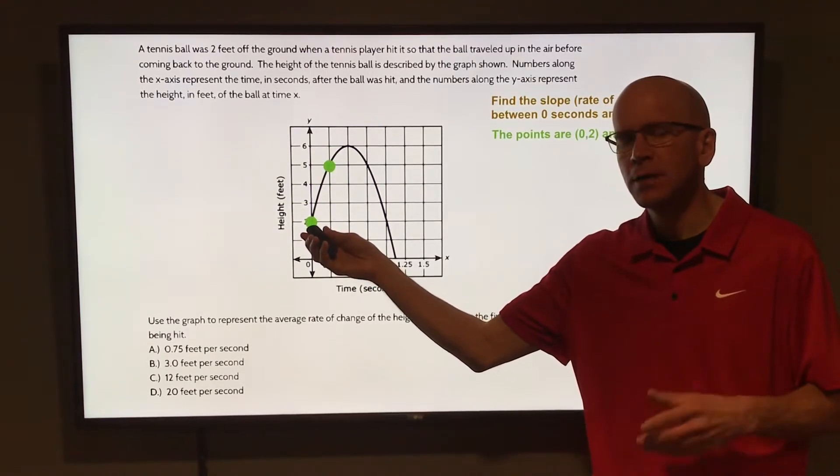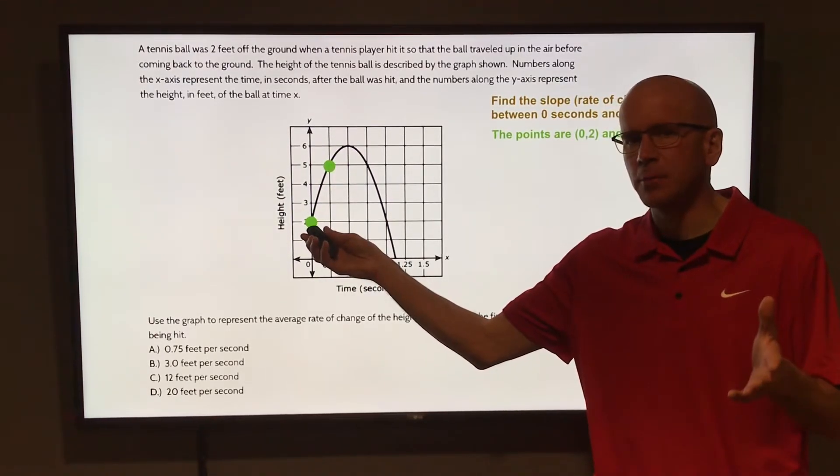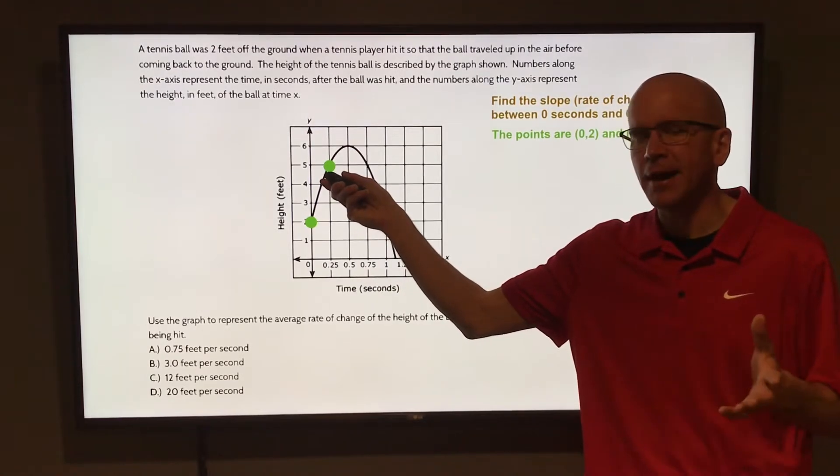The point (0, 2) - just before the ball was hit, the height of the ball was 2, and the point (0.25, 5) - at 0.25 seconds, the height of the ball was 5.